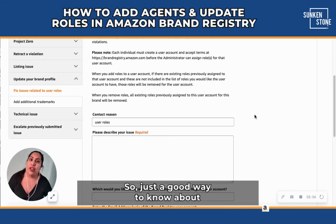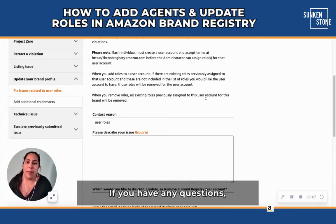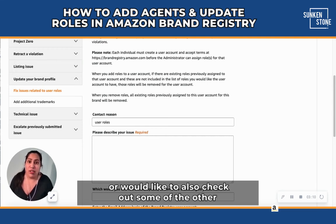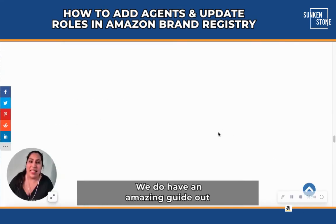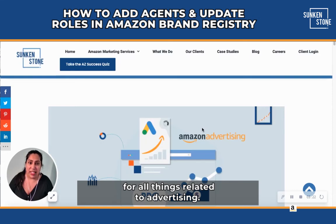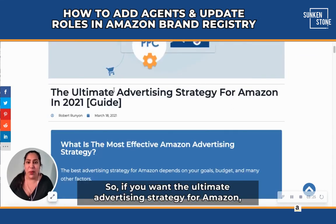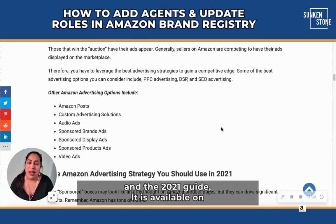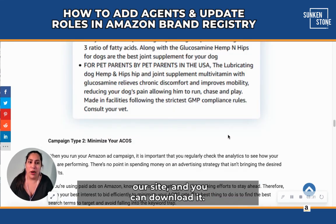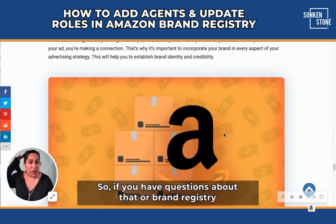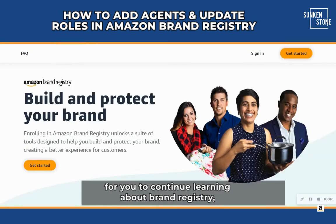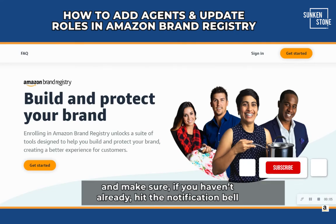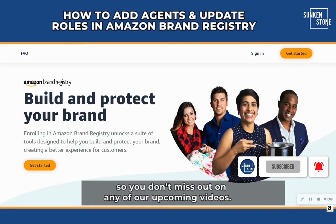So that's a good way to know how to add additional users. If you have any questions, or would like to check out some of the other informative blog posts, we do have an amazing guide out for all things related to advertising — the 2021 ultimate advertising strategy guide for Amazon — available on our site to download. If you have questions about that or brand registry, let us know and comment below. Hopefully we can get you more videos to continue learning about brand registry, and make sure to hit the notification bell so you don't miss out on any of our upcoming videos.